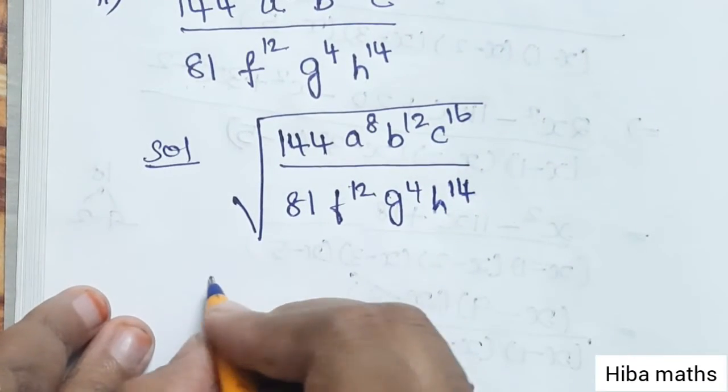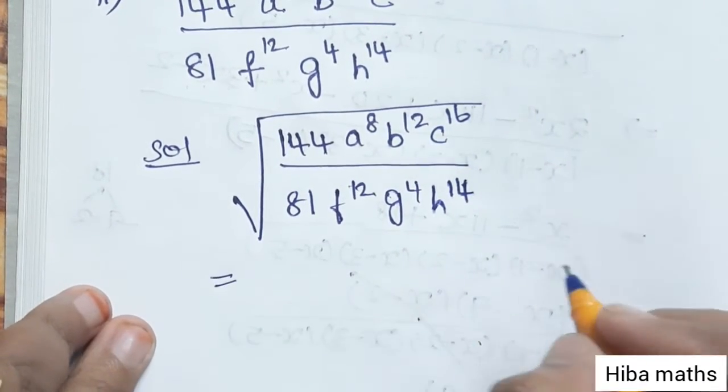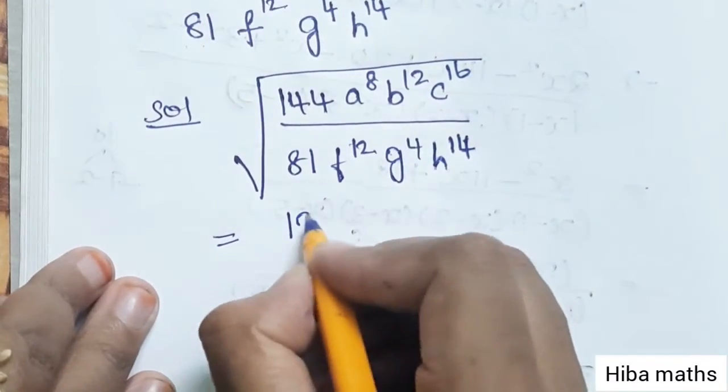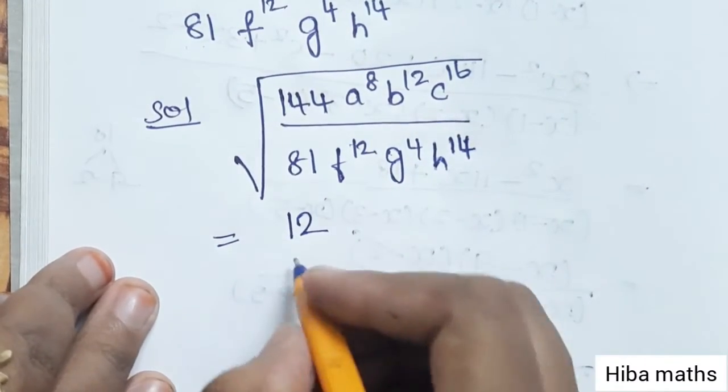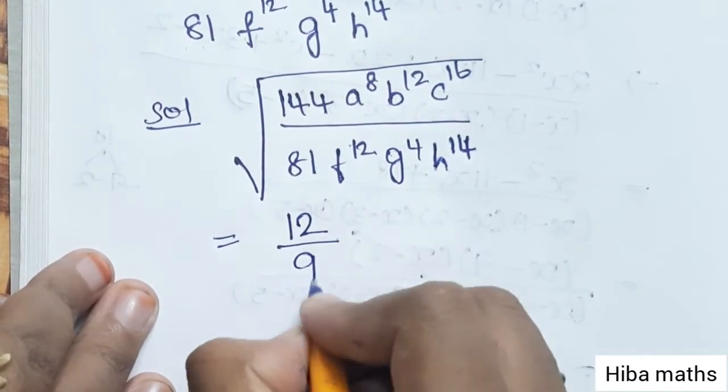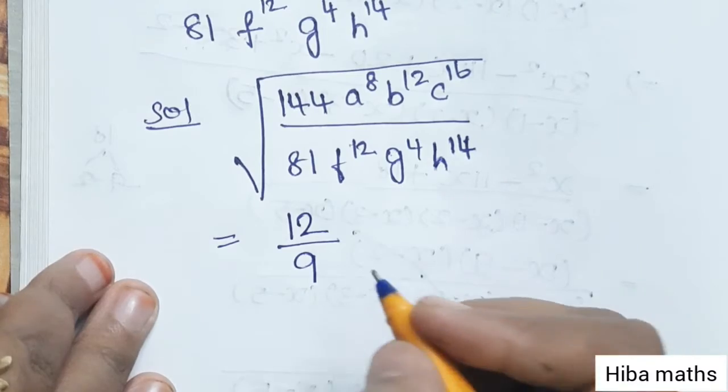First, evaluate the numbers. 144 = 12 × 12, so the square root of 144 is 12. 81 = 9 × 9, so the square root of 81 is 9.